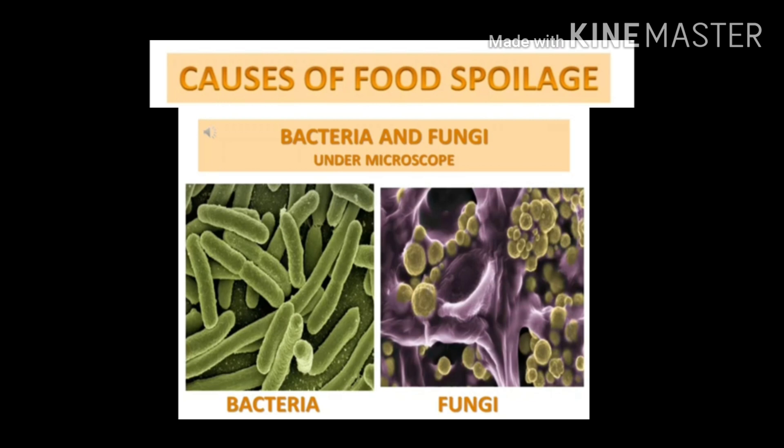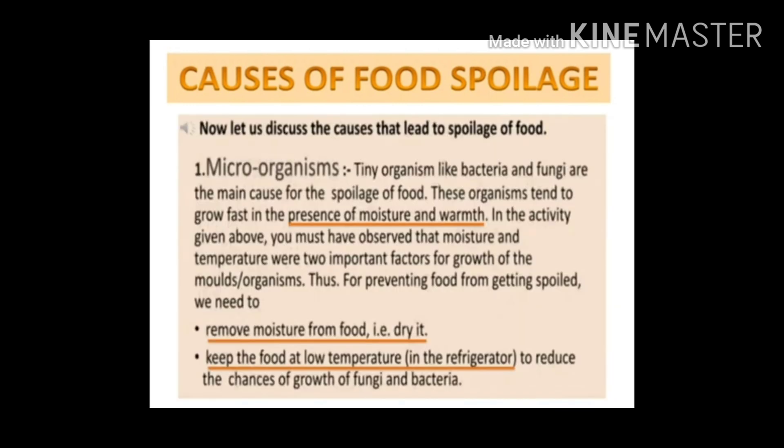Bacteria and fungi tend to grow fast in the presence of moisture and warmth. Just as we observed in the third bread piece — when it got both moisture and warmth, that was the bread piece that spoiled first.